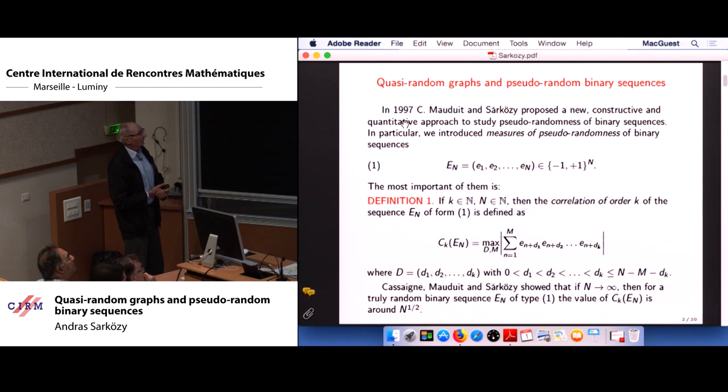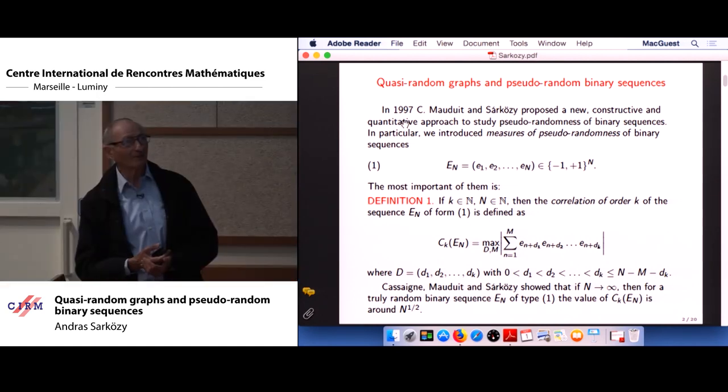We introduce measures of pseudo-randomness of binary sequences of the type in formula one, that is consisting of minus one plus ones. Of course, in practice, usually we have bit sequences, which are also binary sequences, but it is better to work with minus one plus ones, because then usually the formulas are shorter, because the expectation is very frequent with just zero, so one term less to worry about.